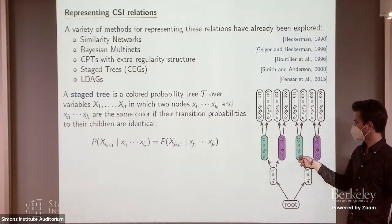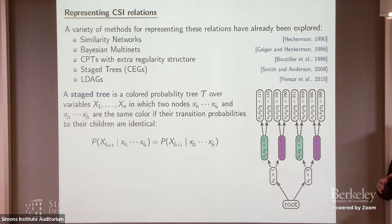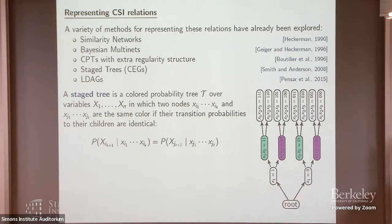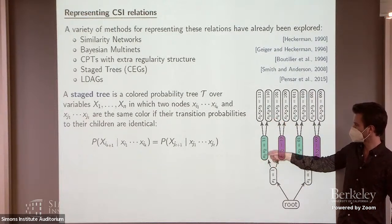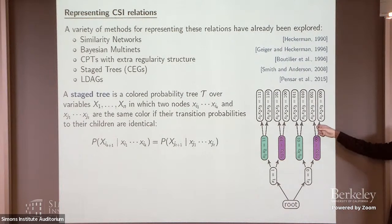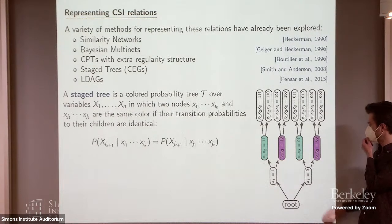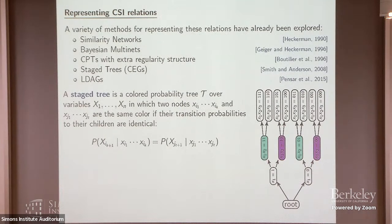For example, these two nodes are blue. These colors represent that the transition probabilities from these two different states to their next state are actually equal. So in particular, the probability of going to x3 given x1, x2 is (1,1) is the same as going to x3 given x1, x2 is (0,1) — that's the blue stage. To simplify things, if we make a node white, that just means it's a color of its own — it has its own set of transition probabilities.